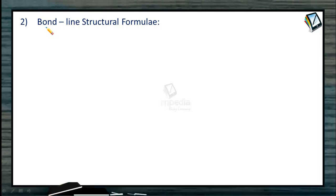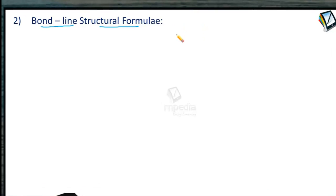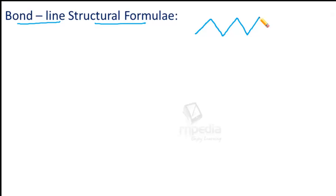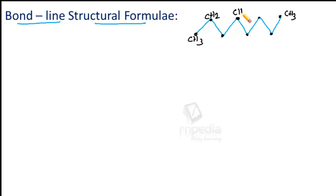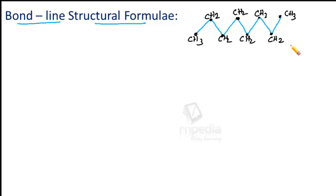The second method is the bond line structural formula — it is the simplest, shortest, and most convenient method of representing organic molecules. In this method, carbon-carbon bonds are shown by lines drawn in a zigzag manner. Each vertex indicates a CH₂ group, and each terminal end of a line indicates a CH₃ group. There is no need to write the atoms of carbon and hydrogen; we need to write only atoms other than carbon and hydrogen.